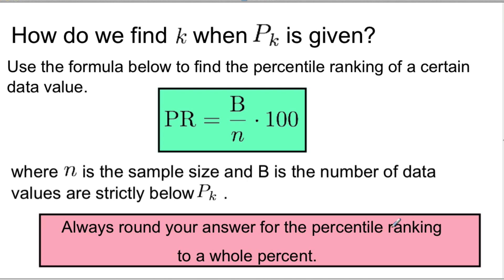Now, let's do a reverse problem. How do we find k when P_k is given? In other words, how do we find the percentile ranking of a given value? For that, we're going to use the formula, PR, percentile ranking,